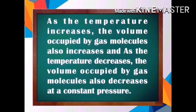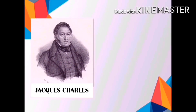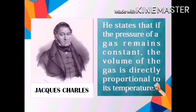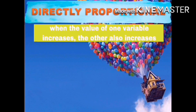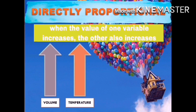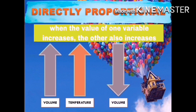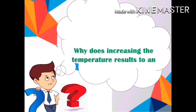This relationship between volume and temperature was first described by Jacques Charles in 1787. He states that if the pressure of a gas remains constant, the volume of the gas is directly proportional to its temperature. Directly proportional means that when one variable increases, the other also increases — when we increase the volume, the temperature also increases, and vice versa.